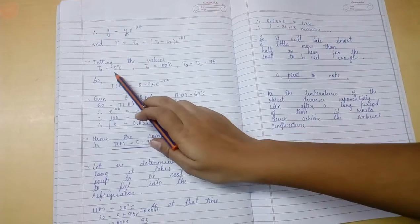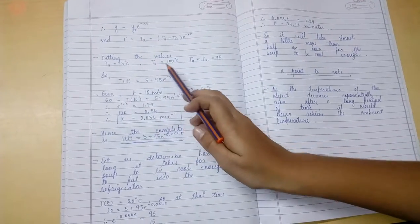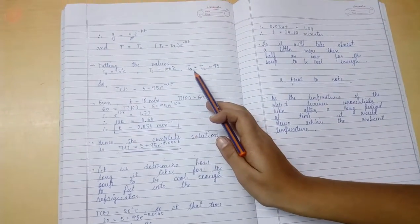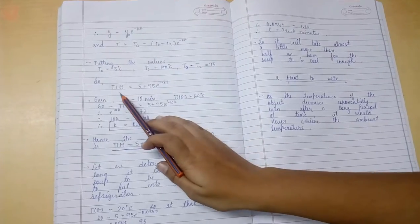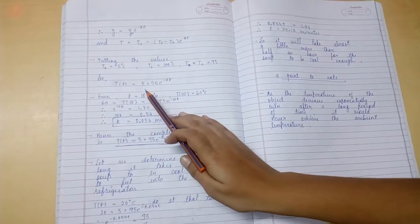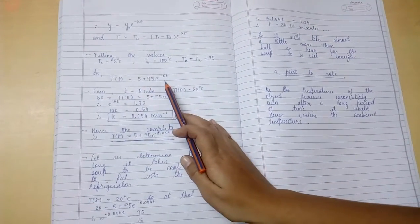Now, putting the values, Ta is 5 degrees, T0 is 100 degrees, and the difference T0 minus Ta is 95. We get T(t) is equal to 5 plus 95 e raised to minus K t.